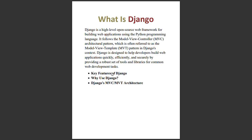Django provides an Object-Relational Mapping system, making it easier to work with databases. It includes URL routing for handling different URLs in your application, and a powerful template engine for creating dynamic web pages.